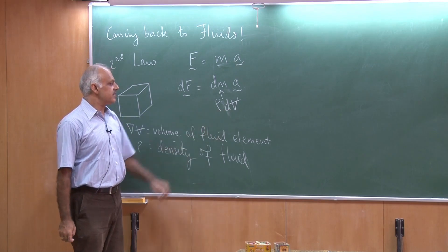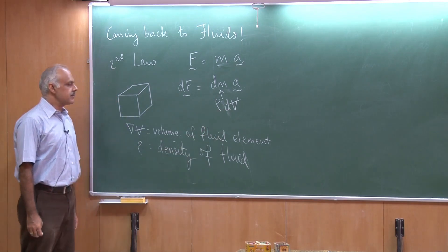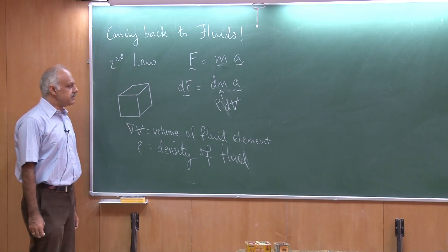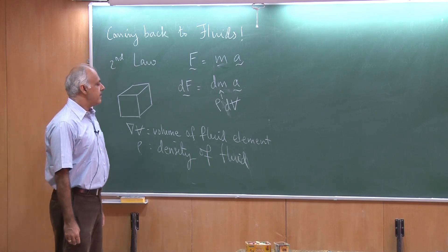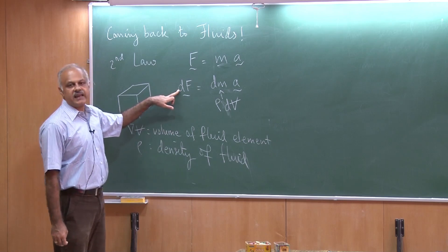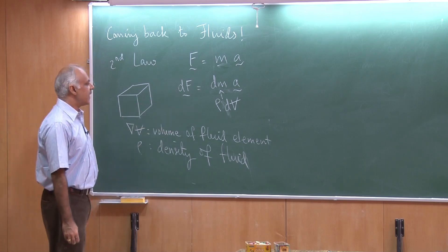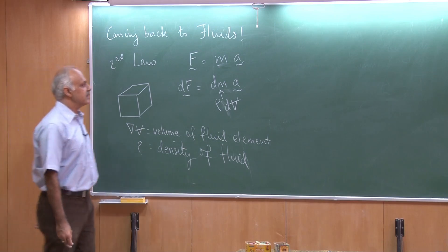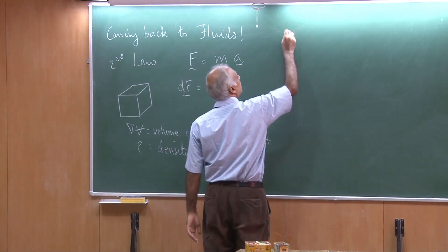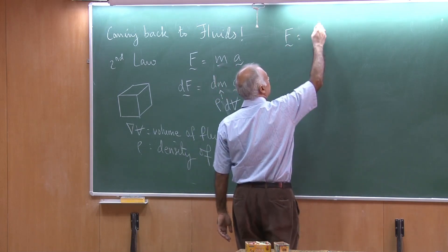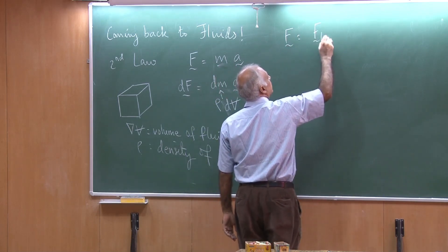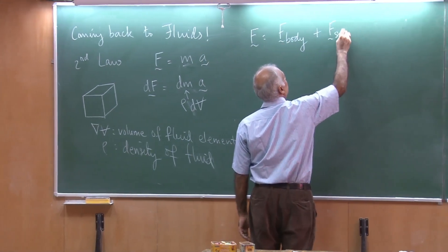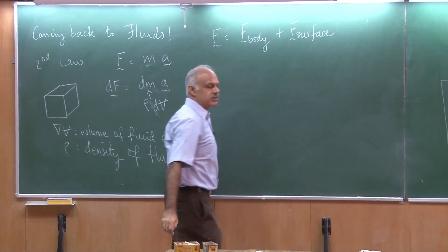So rho is the density and dV is the volume. Now I need to figure out what is F. F is something like an external force which is applied on this fluid element. F is going to have two parts: there is a body force and there is a surface force.